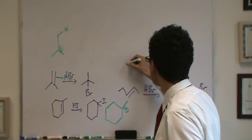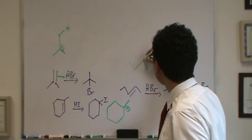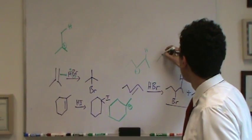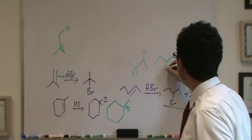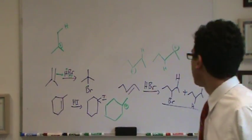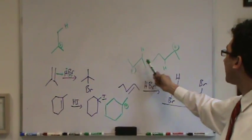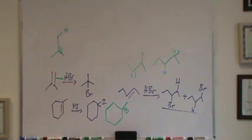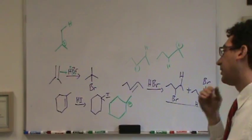In this case, we have some options. You could either put the proton right there, the plus charge in the middle, or put the proton right here, and put a plus charge here. Those would be relatively the same, because this is a secondary and that's a secondary. So that's why you get two products here that will be probably approximately the same amount of yield.